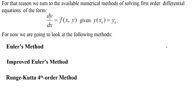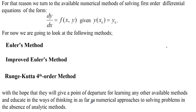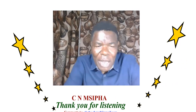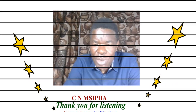The Improved Euler's method uses ideas aimed at getting better approximations of the values of the function that is a solution to a differential equation which cannot be solved analytically. Thirdly, we'll look at the Runge-Kutta fourth-order method — we'll understand later what 'fourth order' refers to. We do this with the hope of educating you in ways of thinking as far as numerical approaches to solving problems are concerned, in the absence of analytic methods. The next step is to discuss these methods and then look at examples. Thank you for listening.